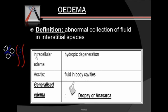Now we have some more terms which classify edema. We have intracellular edema — intracellular edema is when the solvent enters inside the cell, and this type of edema will be called hydropic degeneration. When we generally talk of edema, we don't actually mean the intracellular type; we are generally talking about the interstitial spaces.